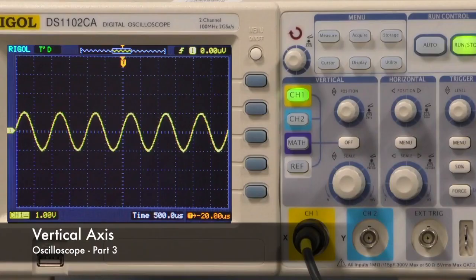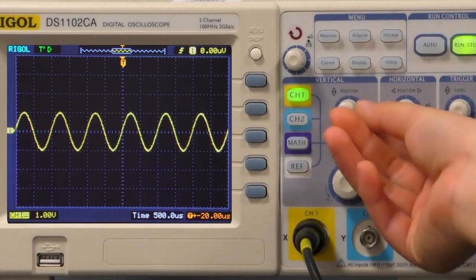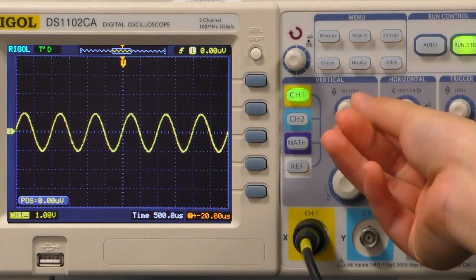So now let's talk about the vertical positioning of your trace. First off, on the oscilloscope, this is the knob that controls the vertical position.